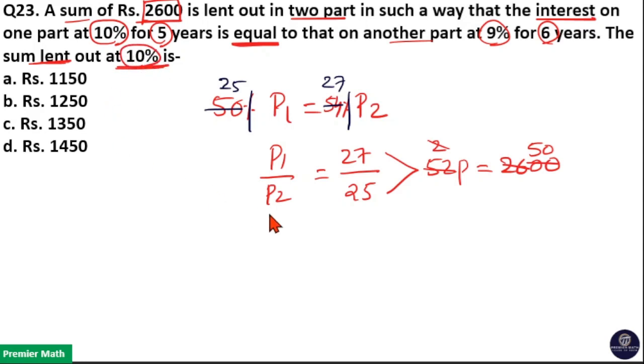Sum lent out at 10 percentage is equal to P1. So P1 is equal to 27 parts, which is equal to 27 into 50. 25 into 5 is equal to 125, 27 into 5 is equal to 135. So 1350, option C is your answer.